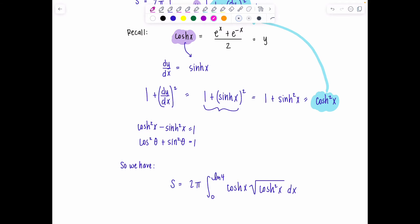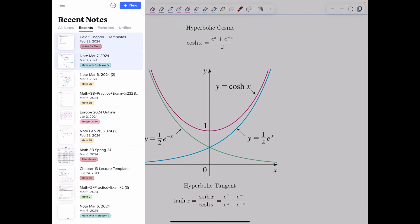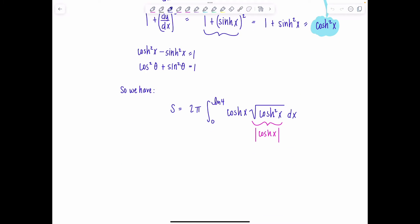Now, technically, square root of cosh squared x is absolute value of cosh x. But do you remember what the graph of hyperbolic cosine looks like? Here's the graph of hyperbolic cosine. As you can see, it's the one right here in pink. The important thing to know about it is that it's never negative. And that it obtains its minimum at 0, 1. So that means in the integral, since we have absolute value right here, it's not necessary. We can drop the absolute value.